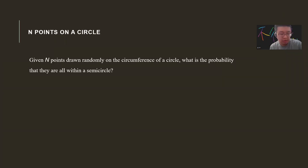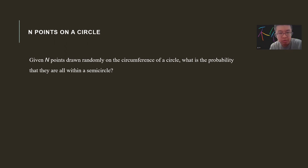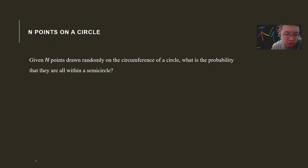Hey, so what's up guys? Let's quickly solve this problem about endpoints on a circle. Given n points drawn randomly on the circumference of a circle, what's the probability that they all lie within a semicircle?